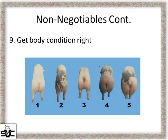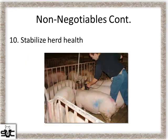Number nine: get body condition right. Implement a program — check sows at a defined time frame, recheck after adjusting feeders, and make sure sows are where they need to be for body condition. Number ten: stabilize herd health — probably one of the most important on our list and one of the hardest to do sometimes, but a bad PRRS break can double your mortality for the year.